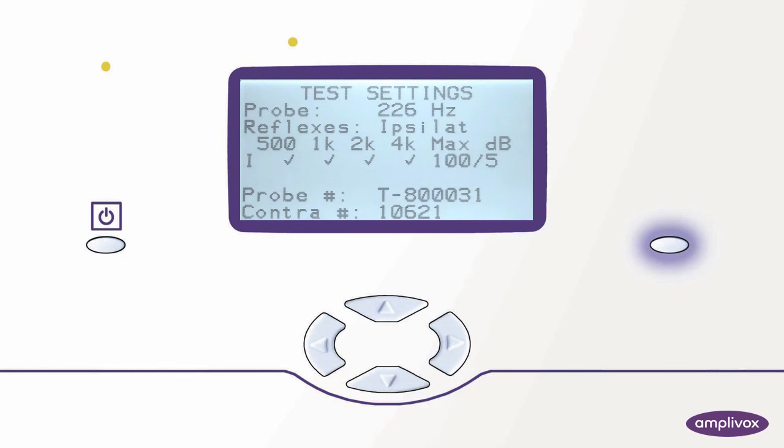When we now select the display mode button again we can see that our test settings contain ipsilateral reflexes for all four frequencies and that we test up to 100 dB.